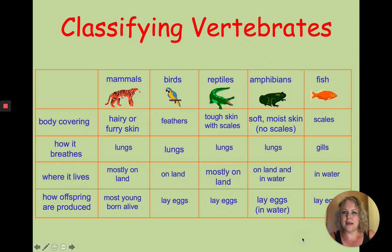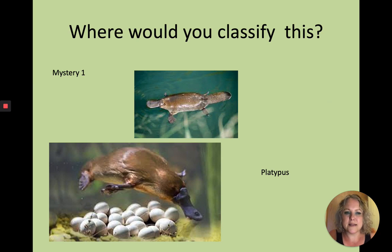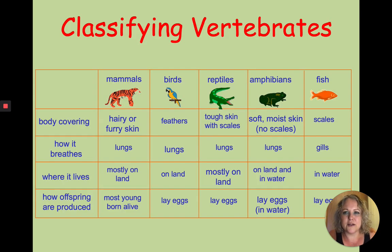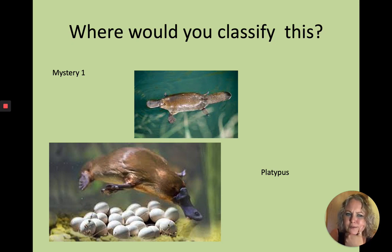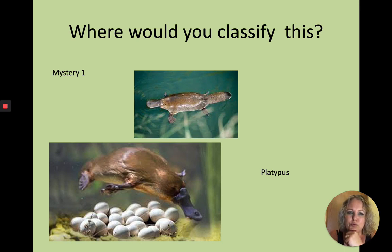Not everything is as easily classified as those pictures. What about this one? Using what you know now — is it a vertebrate or invertebrate? It is a vertebrate. So where would you classify it — mammal, reptile, amphibian, fish, or bird? It lays eggs and swims underwater. Have a think.